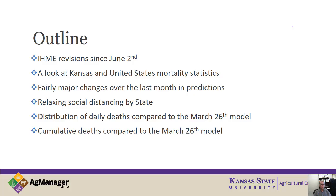This session is going to take a look at the revisions since June 2nd to the model. We'll take a look at Kansas and U.S. mortality statistics. There have been some fairly major changes in the predictions released over the last month, and we'll take a look at those. We'll provide some discussion of social distancing relaxing and some of those criteria, to get a feel for how that differs on a state-by-state basis. We'll then take a look at distribution of daily deaths compared to the March 26th model, to get an indication of what the actual experience has been compared to the original model.